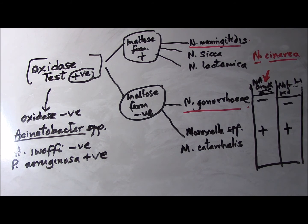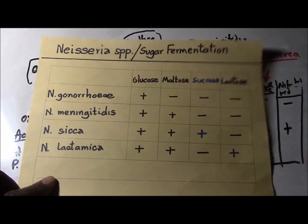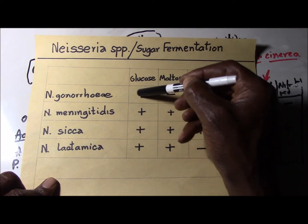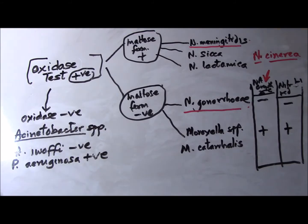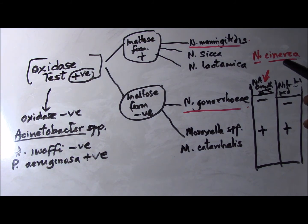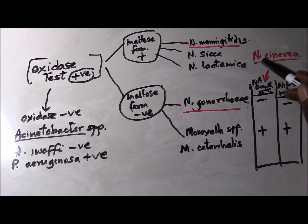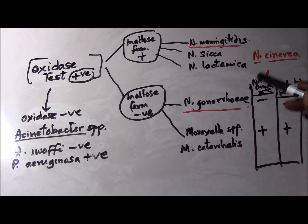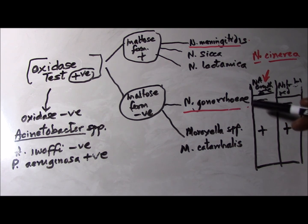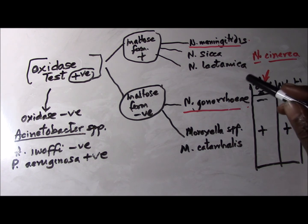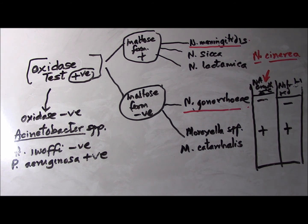Neisseria cinerea has the ability to present a weak glucose reaction, so you look at this place and find a reaction — it could well be Neisseria cinerea. But Neisseria cinerea will grow on nutrient agar at this temperature, whereas Neisseria gonorrhoeae will not. So this is another spoiler that tries to confuse the technologist in the course of identifying Neisseria of medical importance. With this scheme, I would bring this presentation to a close. I wish you the very best as you prepare for your exams. Thank you.